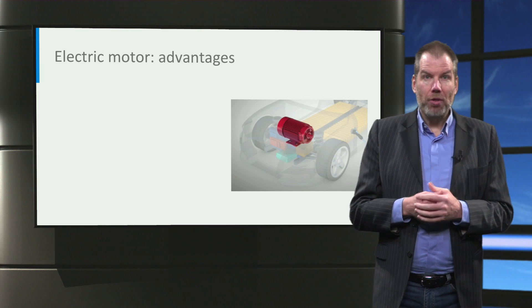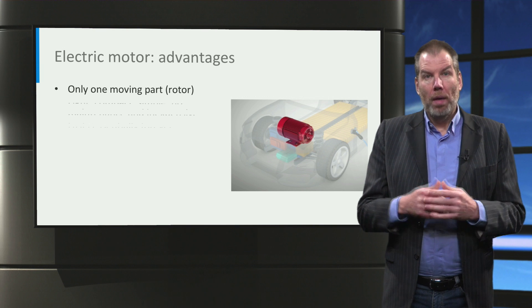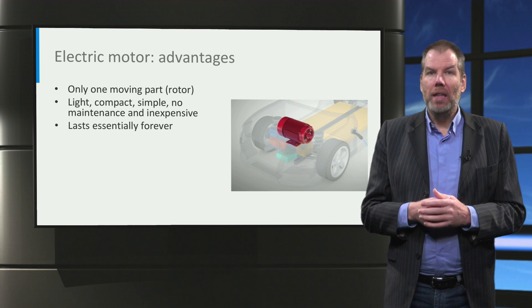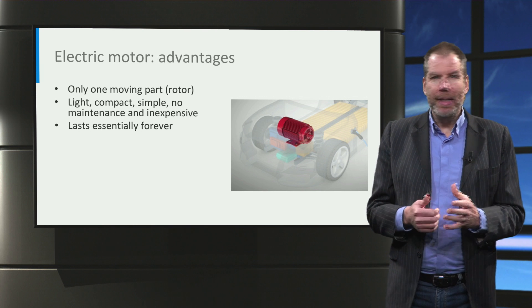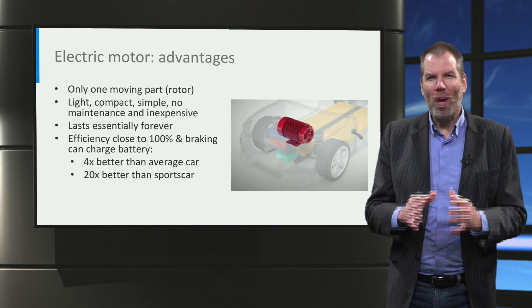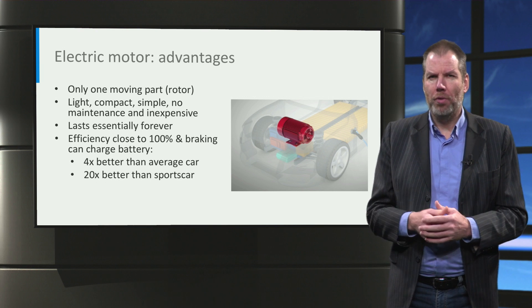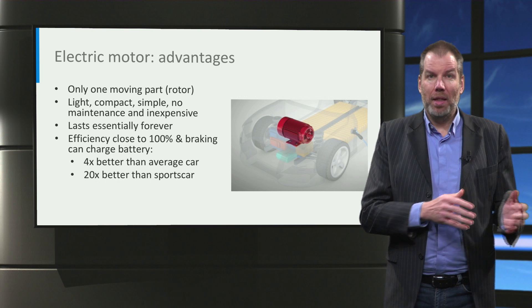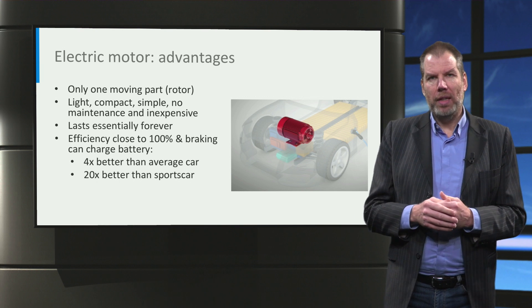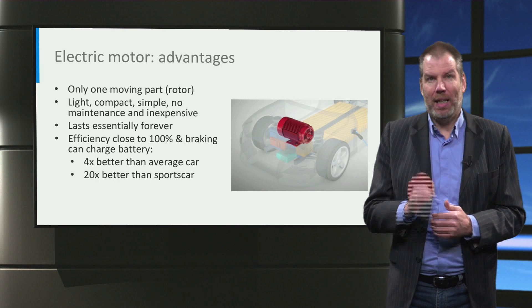The advantages of the electric motor are numerous. It only has one moving part — we call that the rotor. Therefore the whole engine can be relatively light, compact, and inexpensive. Since magnetic fields are very gentle, an electric motor can last essentially forever without any maintenance. Energy efficiency can be close to 100%, and you can even win back energy when braking — so theoretically that takes you over 100% compared to the gasoline engine, which is only 25% efficient. Because of this, the average electric car is four times more efficient than the average conventional car. And comparing sports cars, the electric car is up to 20 times more efficient.